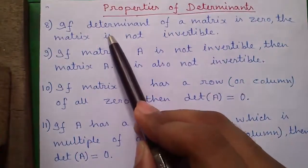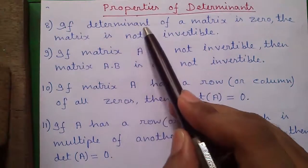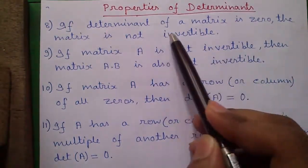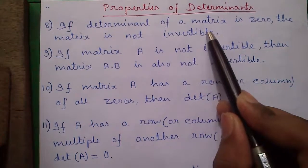So our second property of zeros, our eighth property: if determinant of a matrix is 0, the matrix is not invertible. That means we can't find out inverse of that matrix.